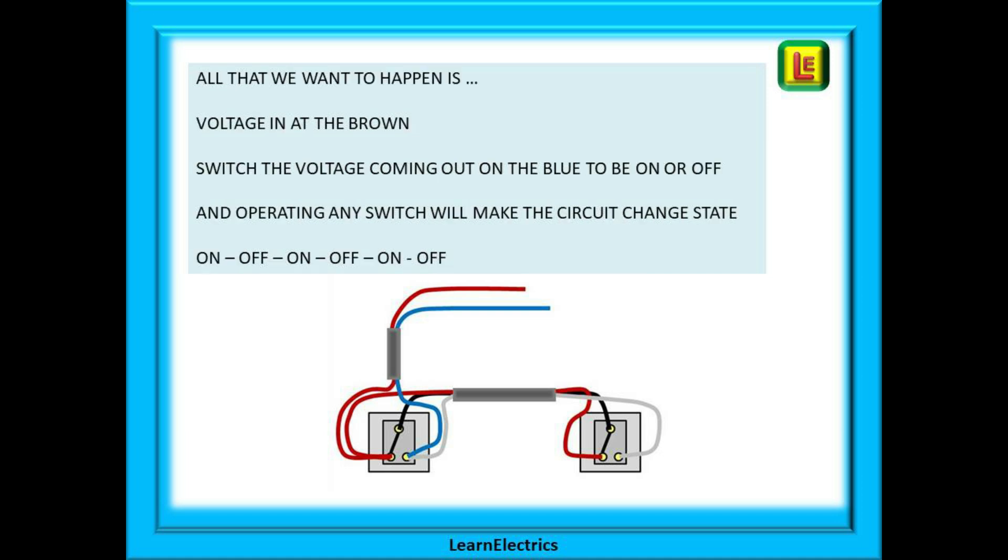All that we want to happen is voltage in at the brown, switch the voltage coming out on the blue to be on or off, and operating any switch will make the circuit change state. On, off, on, off, on, off. Nothing complicated. And in a future video, we will look at intermediate switching, sometimes called three-way switching.